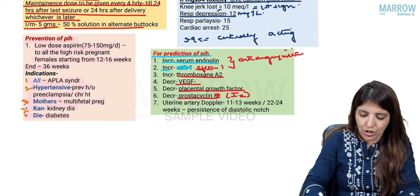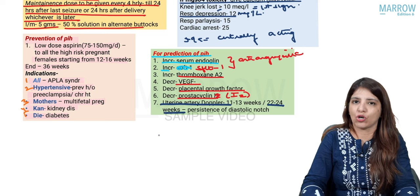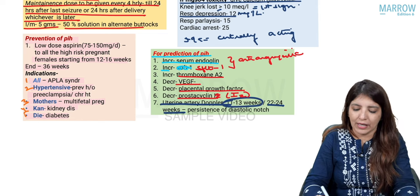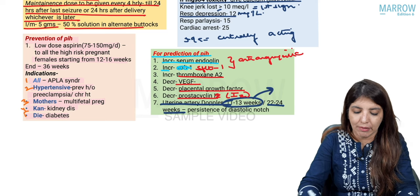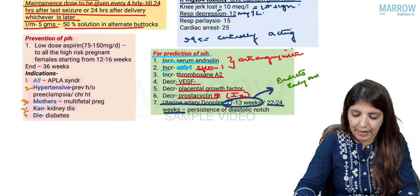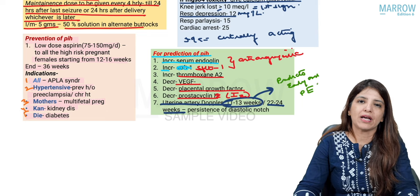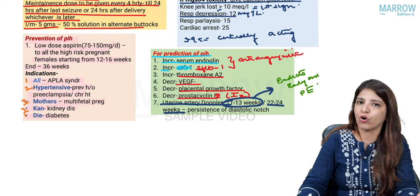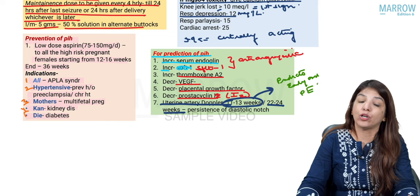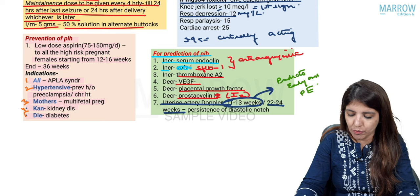Uterine artery Doppler done between 22 to 24 weeks — if it shows persistence of diastolic notch, that is a predictor of PIH. It is also being done between 11 to 13 weeks, where it can predict early-onset preeclampsia. Generally the time for doing it is 22 to 24 weeks to detect persistence of diastolic notch indicating PIH; if done early at 11 to 13 weeks, it can indicate early-onset preeclampsia.